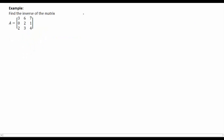For example, we want to find the inverse of this matrix. Step 1, let's find the cofactors. Start by deleting the first row and the first column. If you take this determinant, you get 8 minus 3, which is 5.